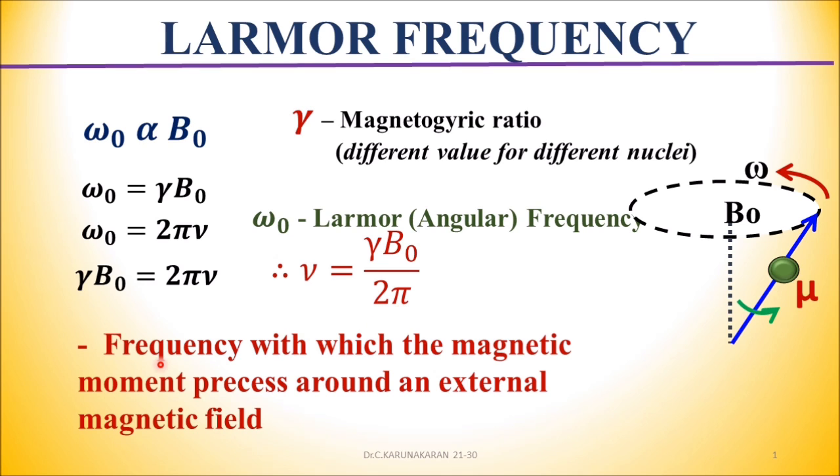What is Larmor frequency? It is the frequency with which the nuclear magnetic moment precesses around an external magnetic field.